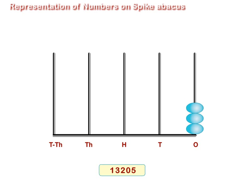Five beads in the ones spike, no bead in the tens spike, two beads in the hundreds spike, three beads in the thousands spike, and one bead in the ten thousands spike.